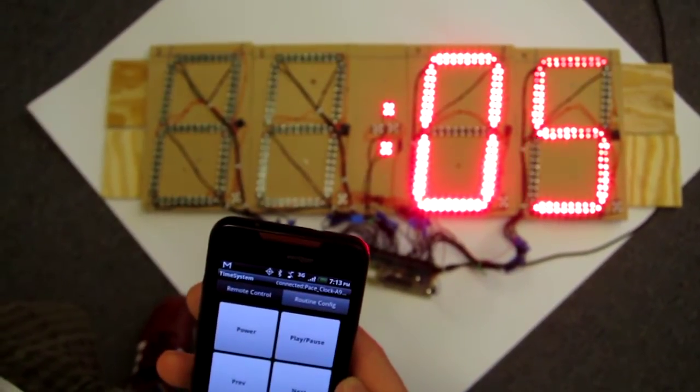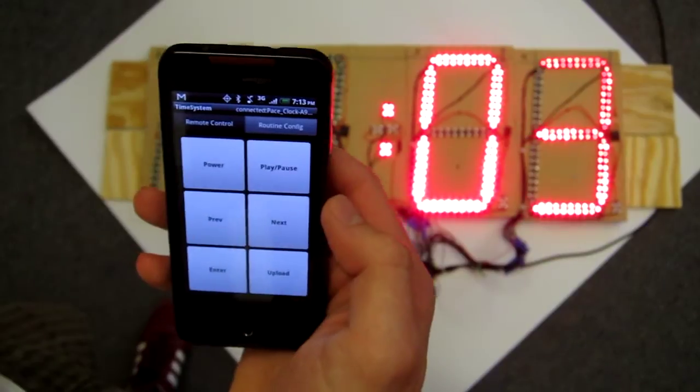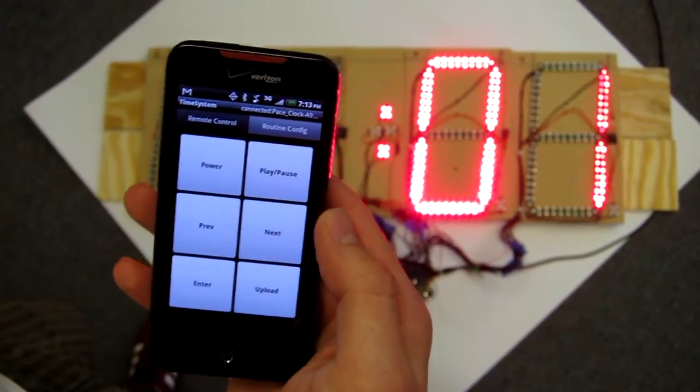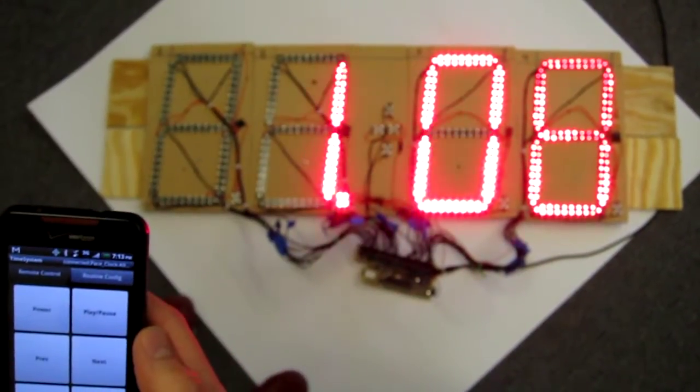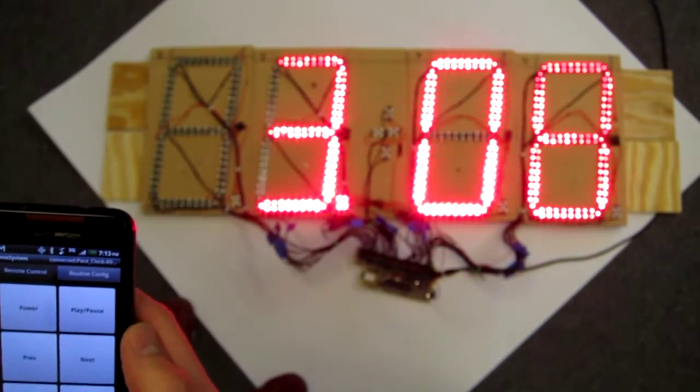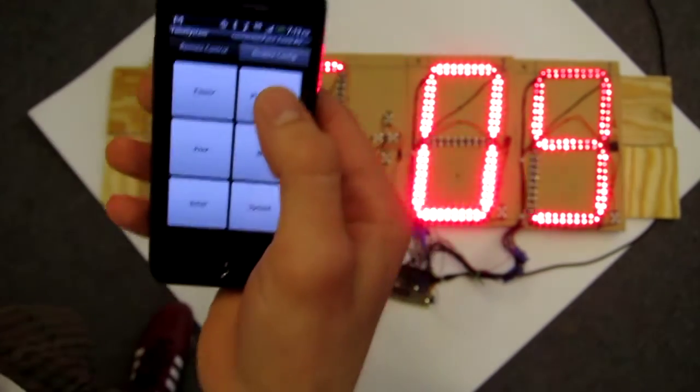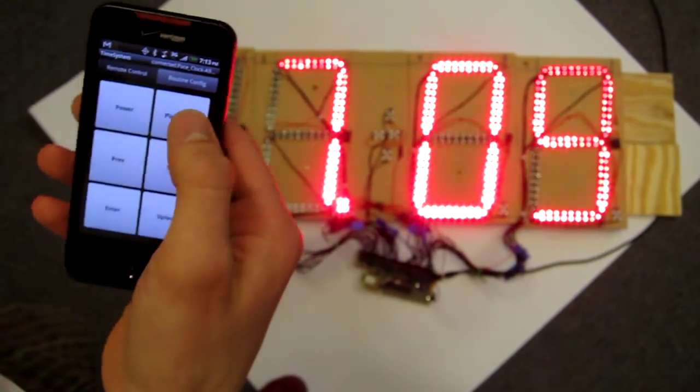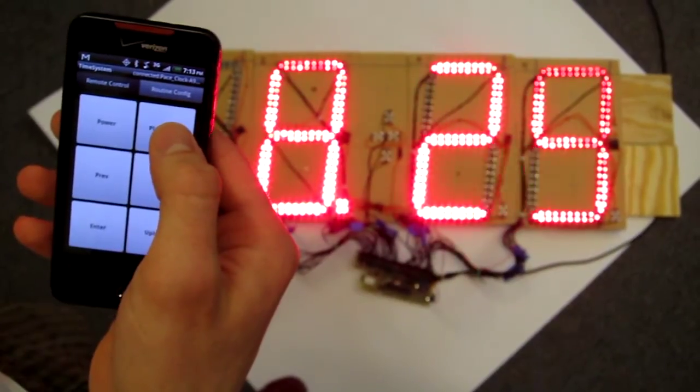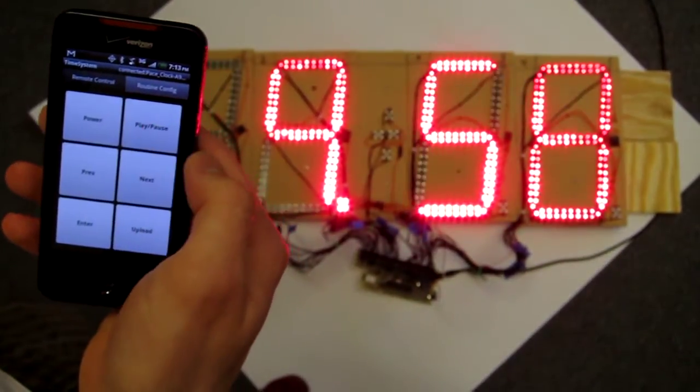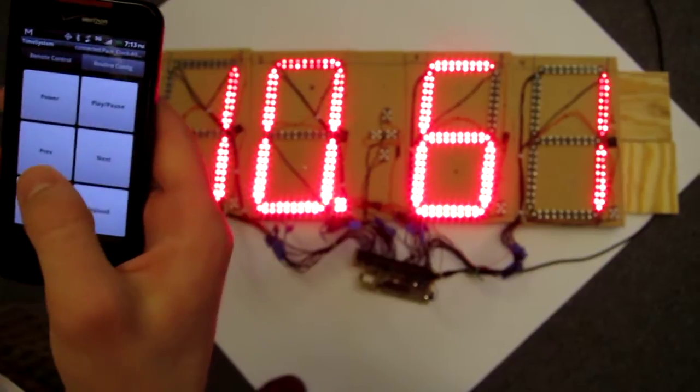Jump to routine 3, which is a 6 second countdown and then a millisecond timer. Restart it.